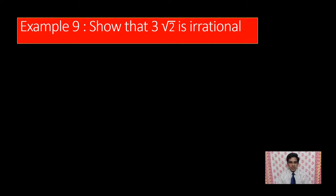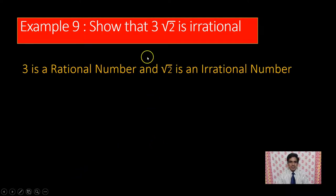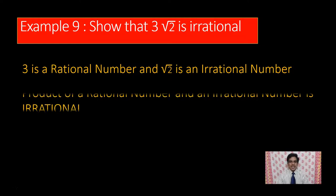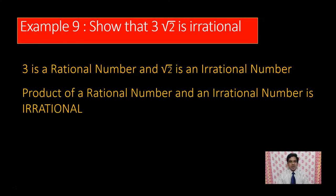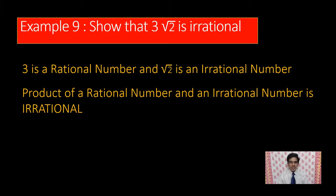We need to prove that 3 into square root of 2 is an irrational number. Before going to the actual proof, let us see what this problem actually tells us. Here, 3 is a rational number and square root of 2 is an irrational number. So, when you multiply a rational number with an irrational number, the result is also irrational. That is what we are going to prove now. We have to prove that the product of a rational number and an irrational number is irrational.